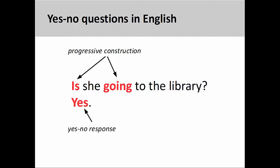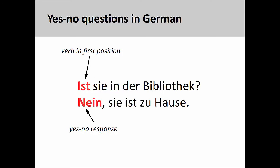It is important to note that German does not have a progressive construction. German forms yes-no questions in the same manner as English, that is, with the conjugated verb in the first position.